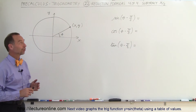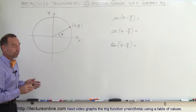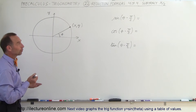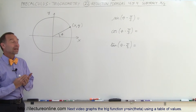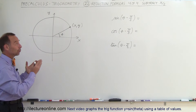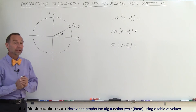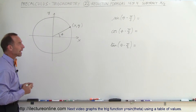Welcome to Electronline. Here's the fourth of the four reduction formula videos. In this case we're going to subtract π/2 from the angle and figure out what the sine, the cosine, and the tangent will become when we subtract 90 degrees from the angle.